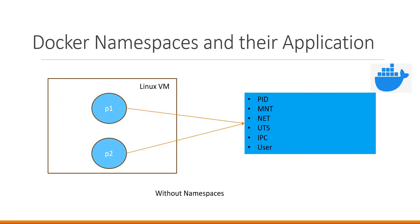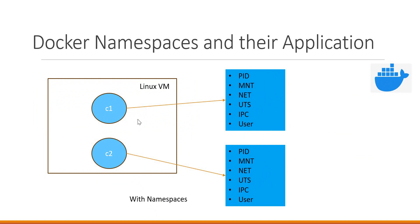Docker uses the namespaces concept to run containers in isolation. Containers are nothing but processes in Linux, but they use the concept of namespaces. With namespaces, containers c1 and c2 created by Docker use the system differently. Container c1 cannot see the process IDs of container c2. Similarly, container c2 cannot see the mount points of container c1, and likewise for network interfaces, IPC, users, and so on. Docker creates isolated namespaces for each container — c1 and c2 each have isolated namespaces for PID, mount point, network interface, and so on. These namespaces allow containers to run in isolation.